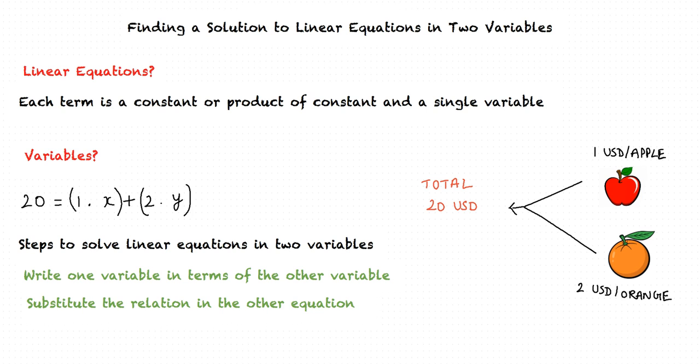The next step is to substitute the relation between the variables we have obtained in the previous step in the other equation so that we have one equation with one unknown. We finally solve for the variables.